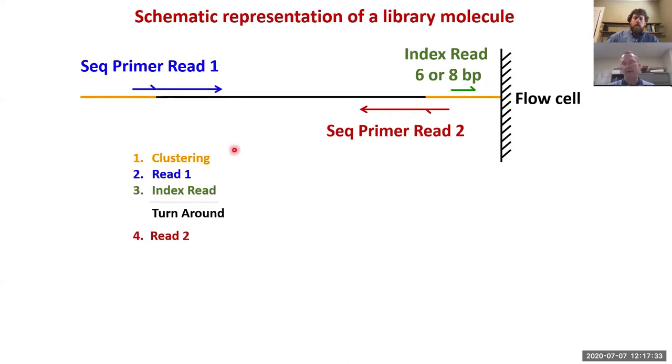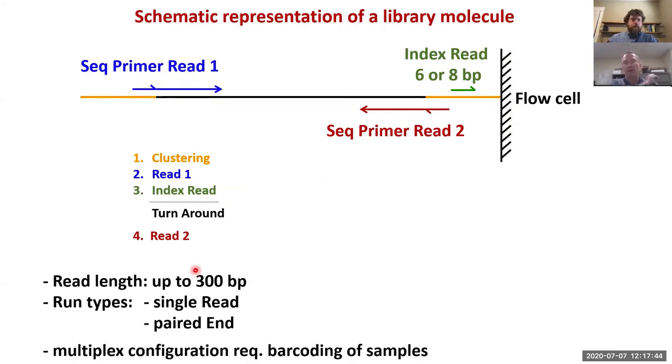The summary is here: first the clustering which is the immobilization and amplification of a molecule on the flow cell, read one, the index read, the turnaround, and then read two. With the NextSeq instrument which we have on campus you can sequence up to 300 base pairs and you can sequence either in single read mode or paired end read mode. You can choose the length of your read as long as it's 300 base pairs, so you could theoretically do 298 cycles in one direction and 10 in the other direction or whatever works for you.